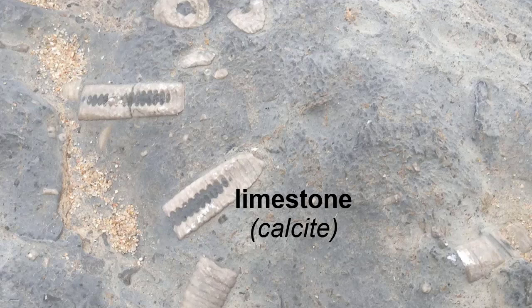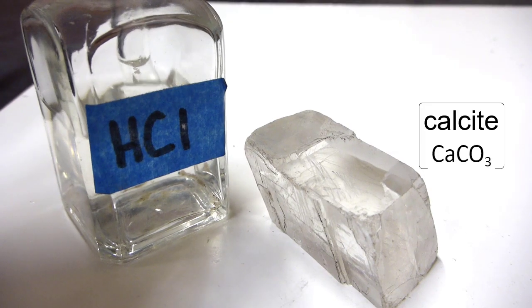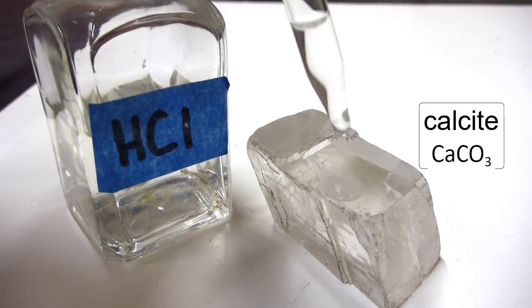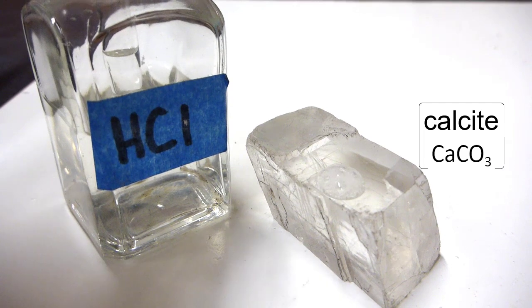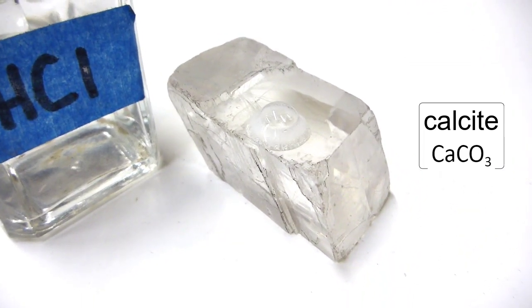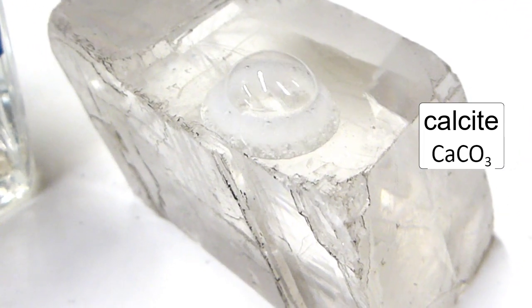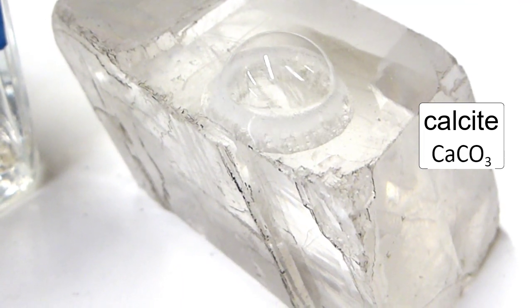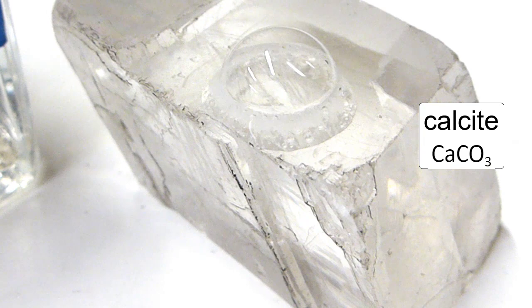Often, we will see fossils of these ancient organisms in the limestone, as the calcite simply replaces the organic material and maintains the same shape. The mineral calcite has the chemical formula CaCO3 and is also called calcium carbonate. Calcite dissolves when in contact with acids, and most groundwater is slightly acidic and will dissolve limestone when in contact with it over hundreds to thousands of years.